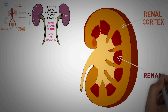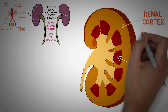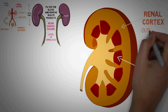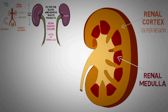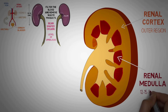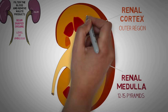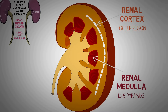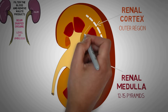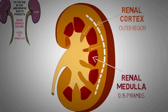The renal cortex is the outer region of the kidney while the renal medulla consists of these 12 to 15 cone-shaped structures known as the medullary pyramids. The outer renal cortex runs in a continuous manner with a number of projections that extend down between the pyramids.